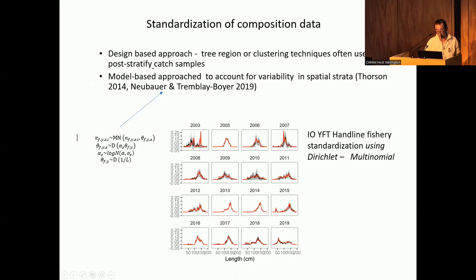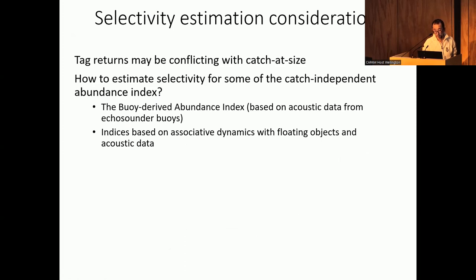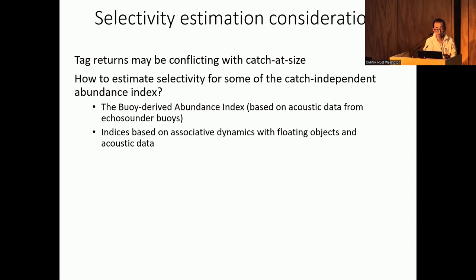On the topic of selectivity estimation, it's not just composition data that affects selectivity estimates for tuna assessment. Tagging returns can conflict with your size composition data, which can cause bias in your selectivity estimates. Another issue is the recent development of catch-independent abundance indices from the purse-seine fisheries — echo-sounder buoy abundance indices and indices based on associated behavior of fish with floating objects. Those indices have already seen a lot of application in actual assessments, but I haven't really seen much research on how selectivity for those indices are derived — maybe an issue that needs to be thought about. Thank you.